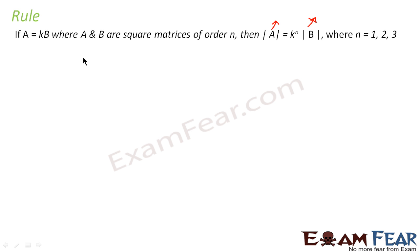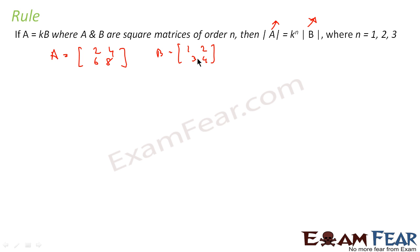To prove this, let me take one example. Let matrix A be [2, 4; 6, 8] and let matrix B be [1, 2; 3, 4]. The determinant of A is nothing but 2 into 8 — that is 16 — minus 6 into 4 — that is 24.